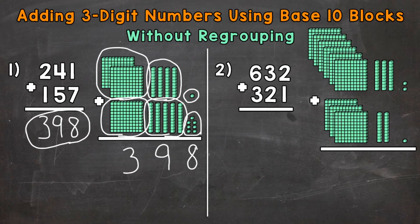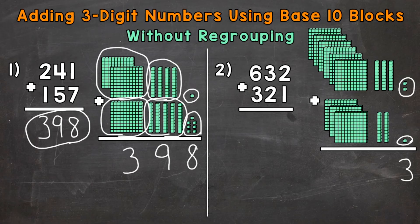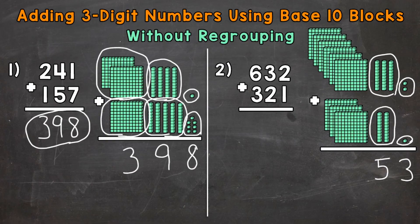Let's move on to number 2 where we have 632 plus 321. We start with the ones place: 2 ones from 632 plus 1 one from 321 gives us a total of 3 ones. Moving to the tens place, we have 3 tens or 30 plus 2 tens or 20. 3 tens plus 2 tens gives us a total of 5 tens or 50.